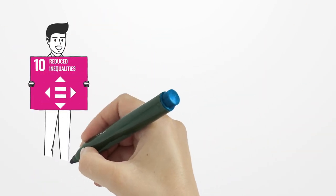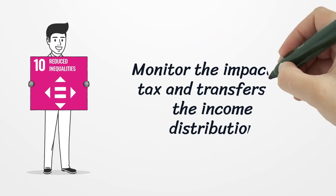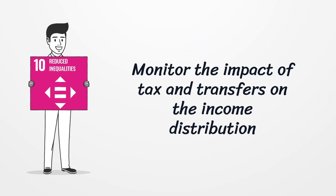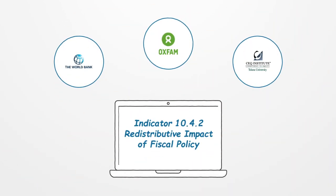To deliver on the promise of SDG 10 to reduce inequality, we need to monitor the impact of tax and transfers on income distribution. This is now possible thanks to the introduction of Indicator 10.4.2, proposed by the World Bank, Oxfam and the Commitment to Equity Institute.